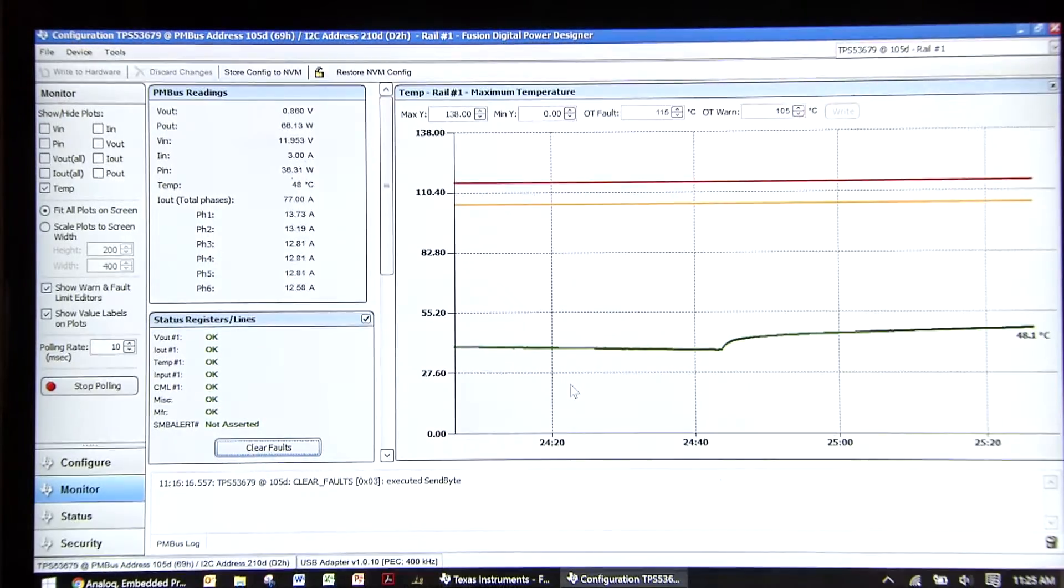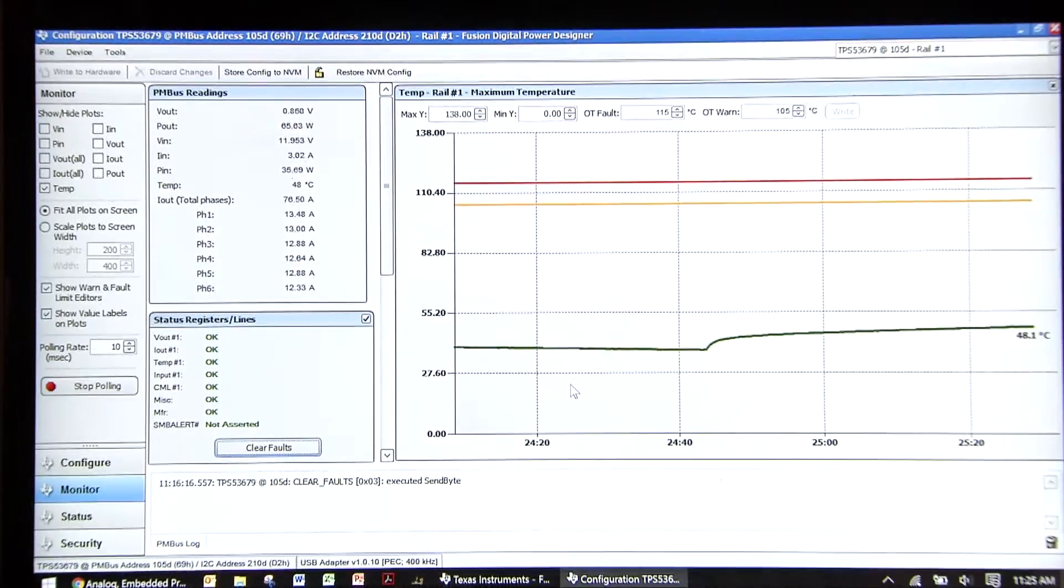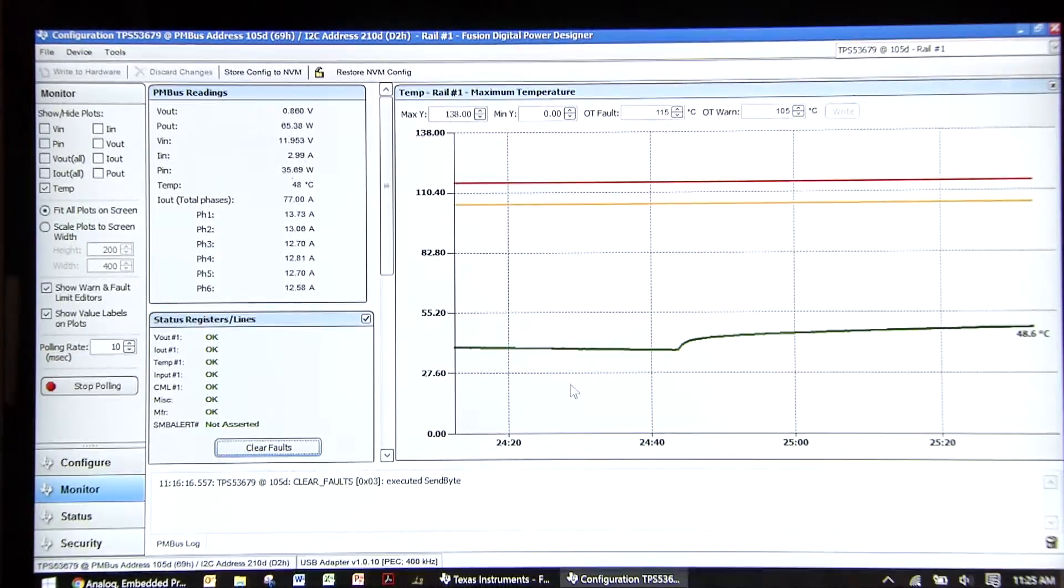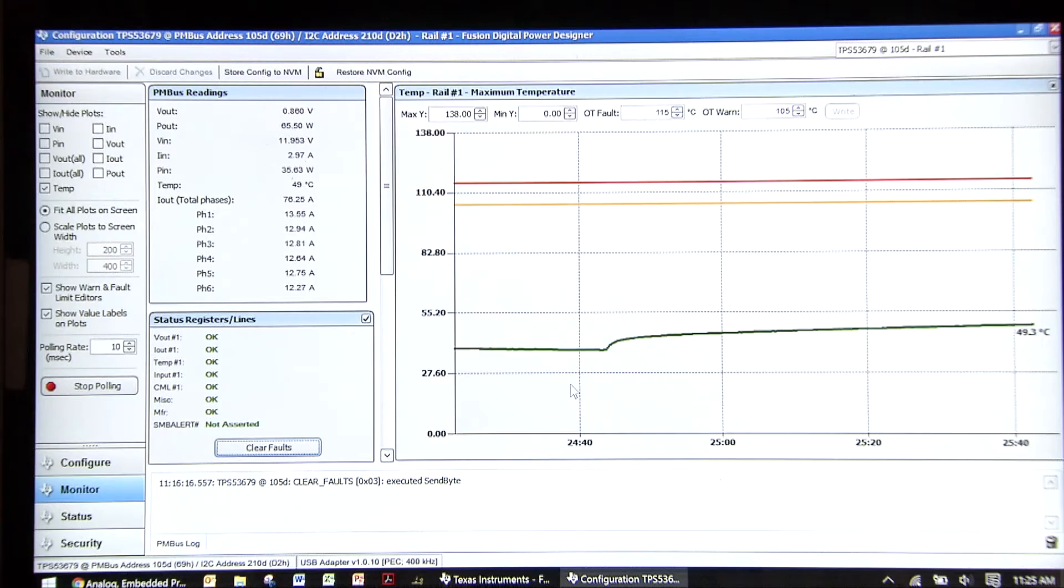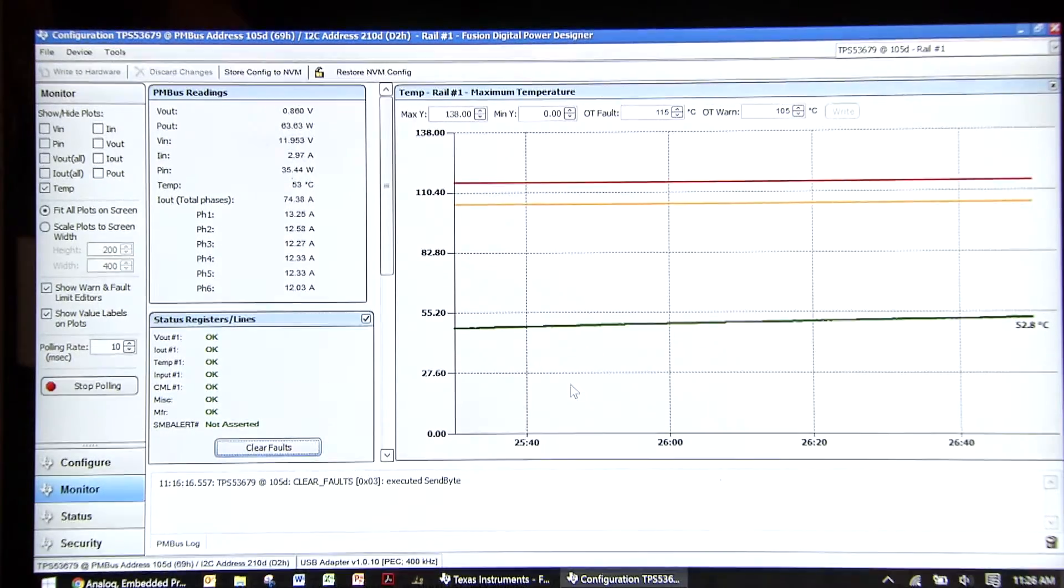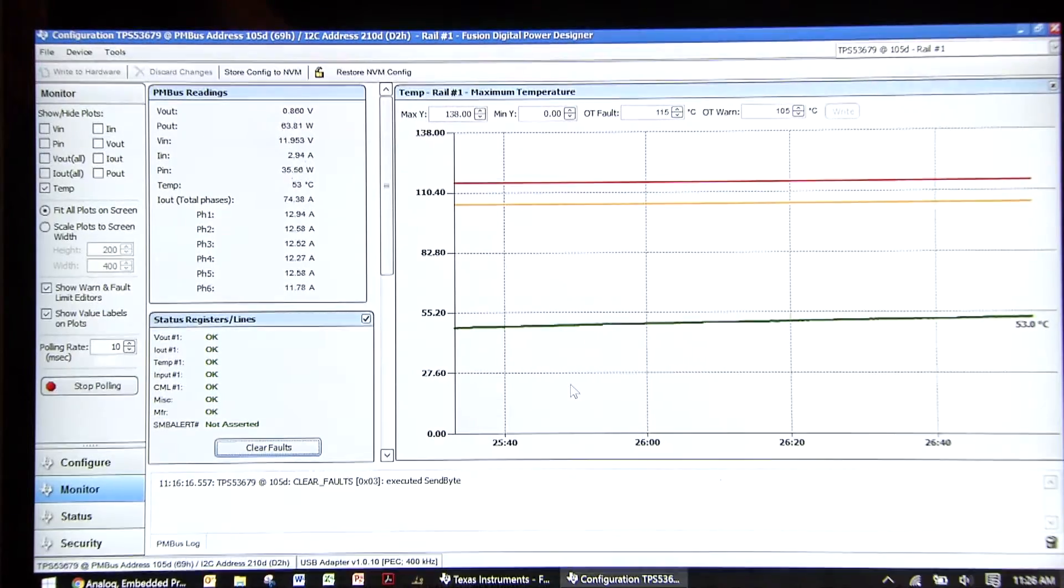I'll set the load on the part to 80 amps and we can see what the temperatures are after a five-minute soak so the part can reach thermal steady state. After five minutes you can see from the GUI I'm getting a max temperature of 52 to 53 degrees Celsius on the hottest power stage, for a rise just higher than 30 degrees C over ambient.